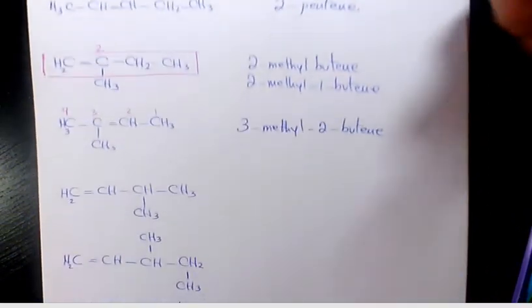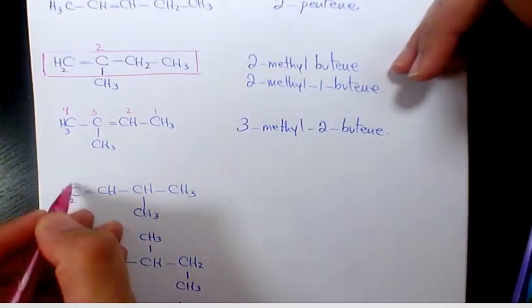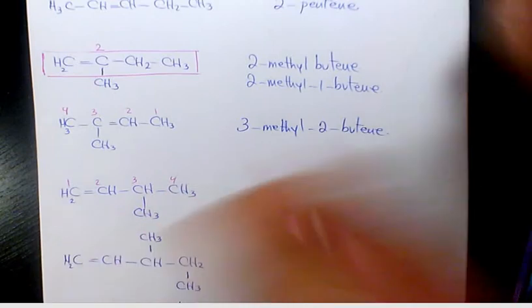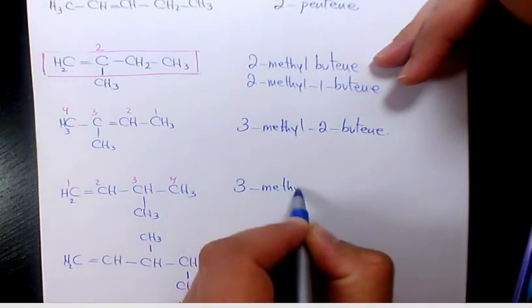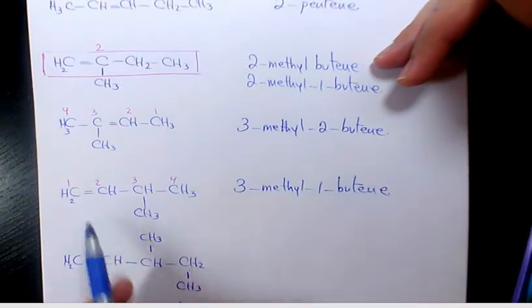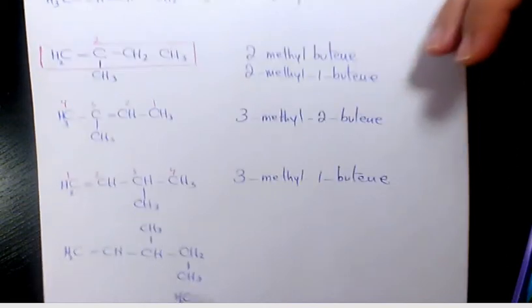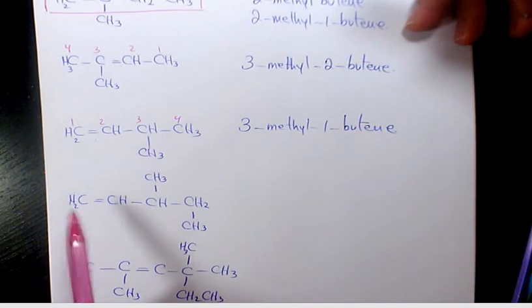Next one, we need to start numbering from this side: one, two, three, four. That's going to be 3-methyl-1-butene because the double bond is on the first carbon. Next, how many carbons we have on the main one?